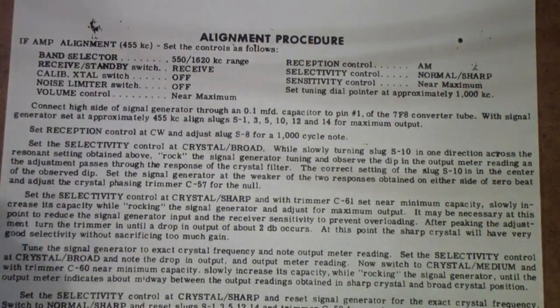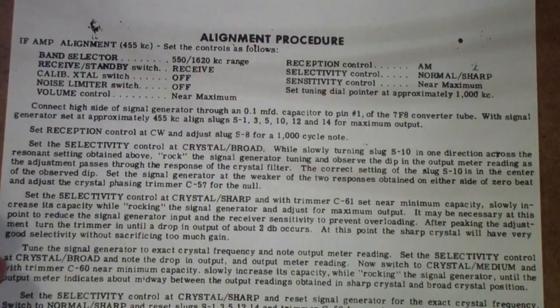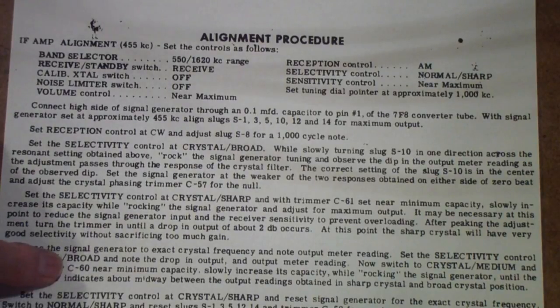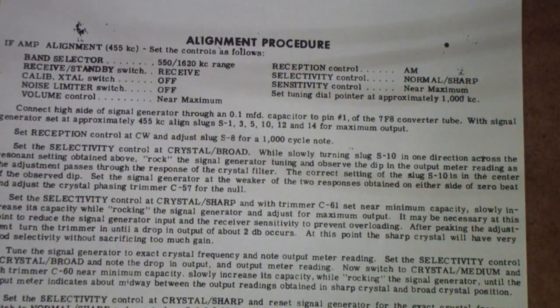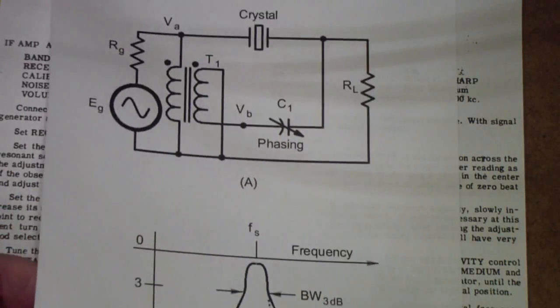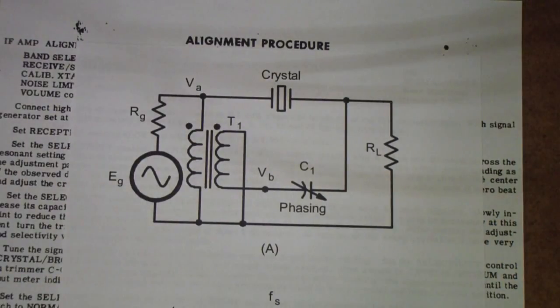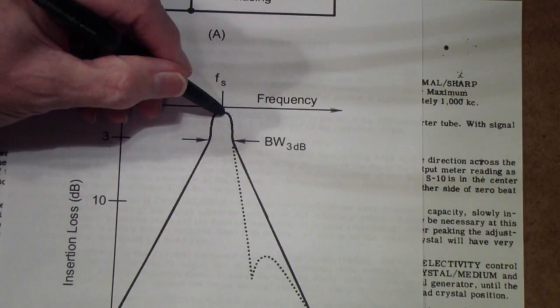then you may notice it says tune the signal generator to exact crystal frequency set the selectivity control at crystal broad and note the drop and output meter reading now you switch to crystal medium and adjust C60 from near minimum capacity slowly increase it while rocking the generator the what you're trying to accomplish is to balance the the crystal in its three selectivity positions so that they all operate around this same frequency